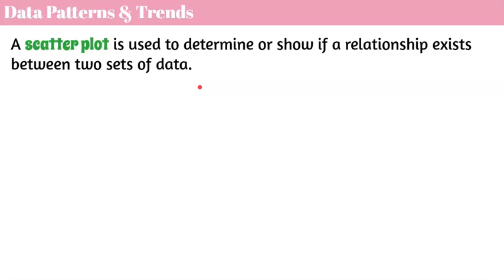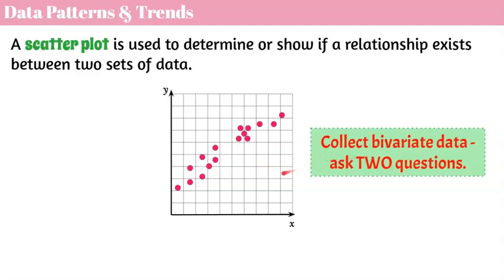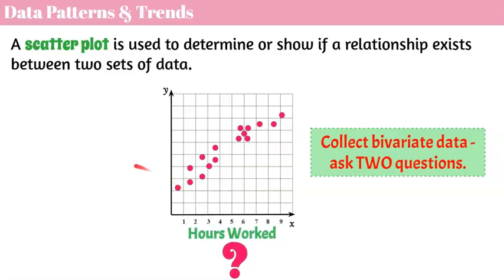Maybe you're researching something and you want to show a relationship, or you want to determine if a relationship exists — proving something to yourself, or trying to prove it to someone else. Here is an example of a scatterplot. We have our X-axis and Y-axis, and we look at our data points. Every one of these ordered pairs has an X value and a Y value. In order to get those two pieces of data to form a point, we ask two questions: how many hours did you work, and how much money did you earn? Then we collect that data, and for every person we survey, we put their two answers together and see if there's a relationship.